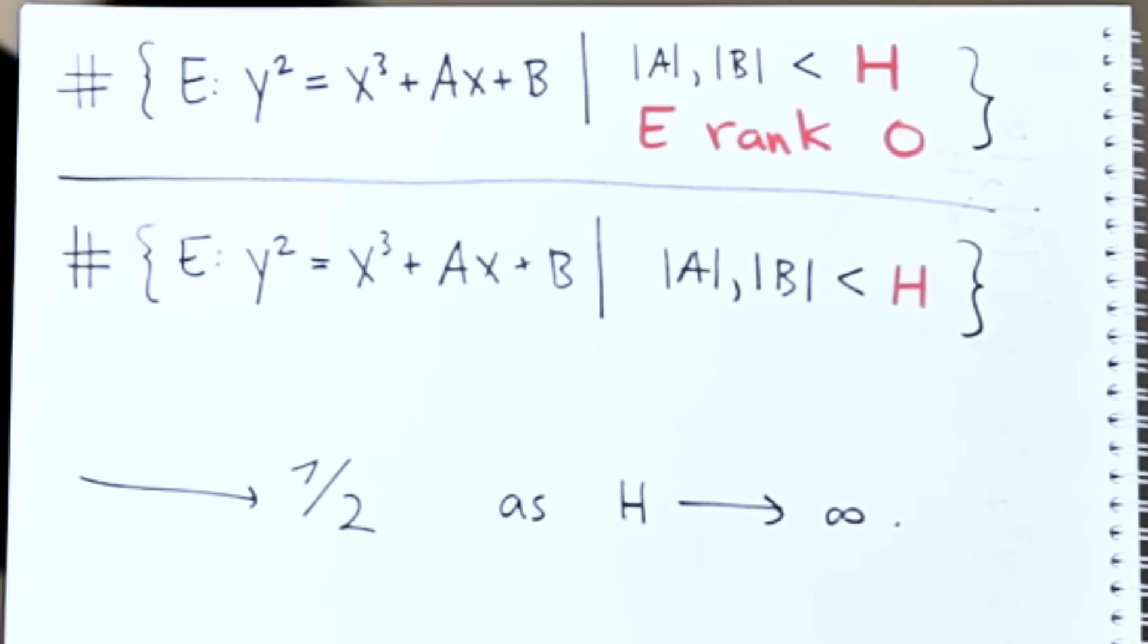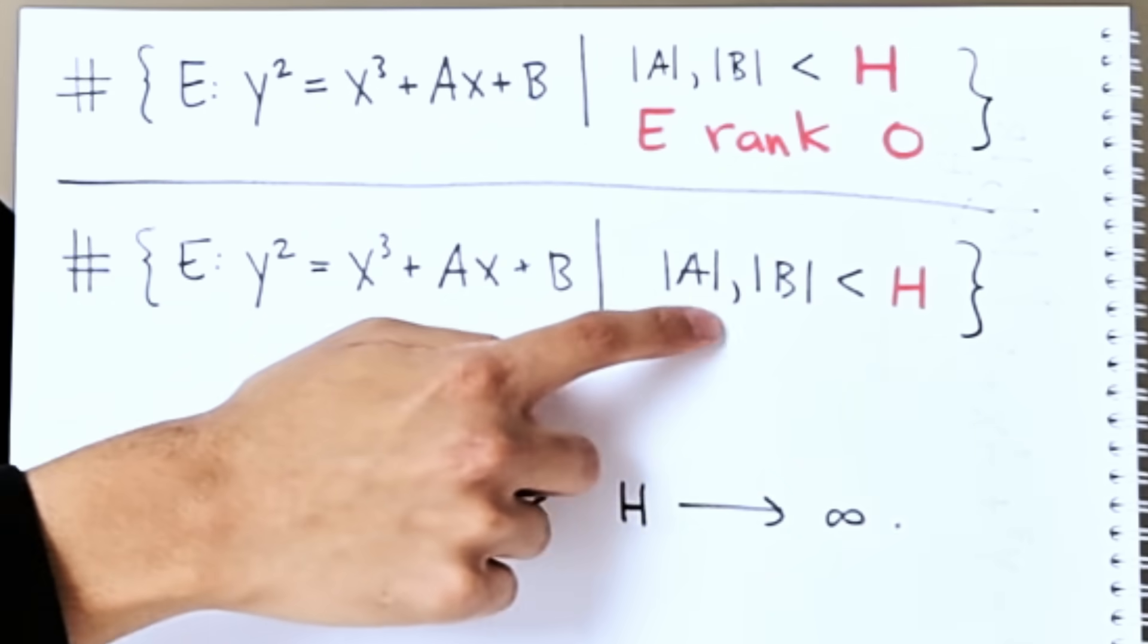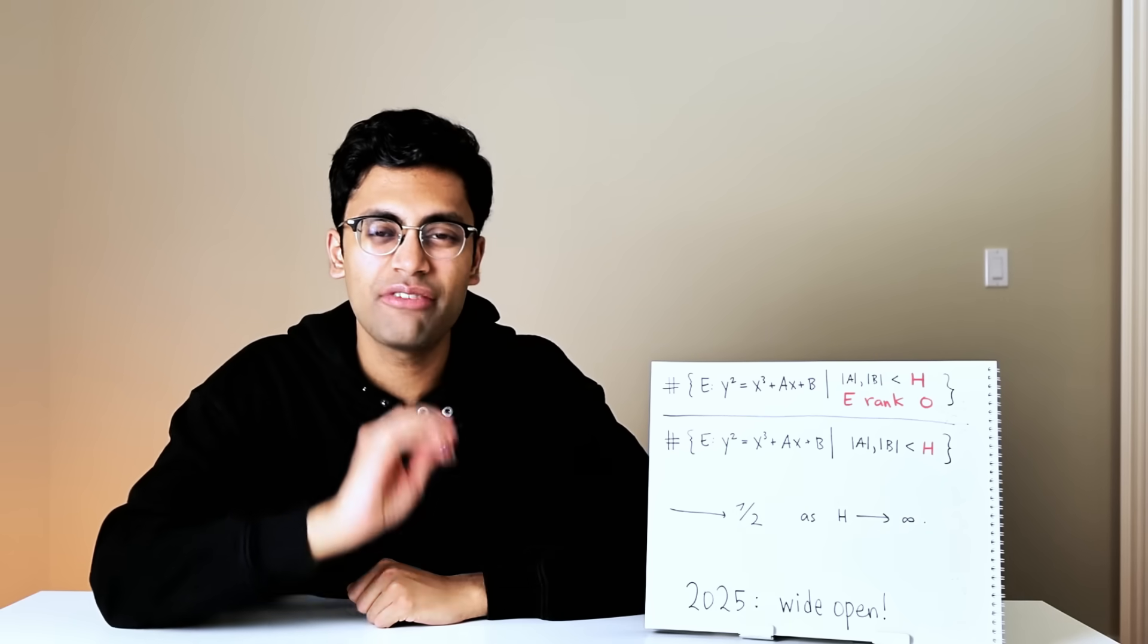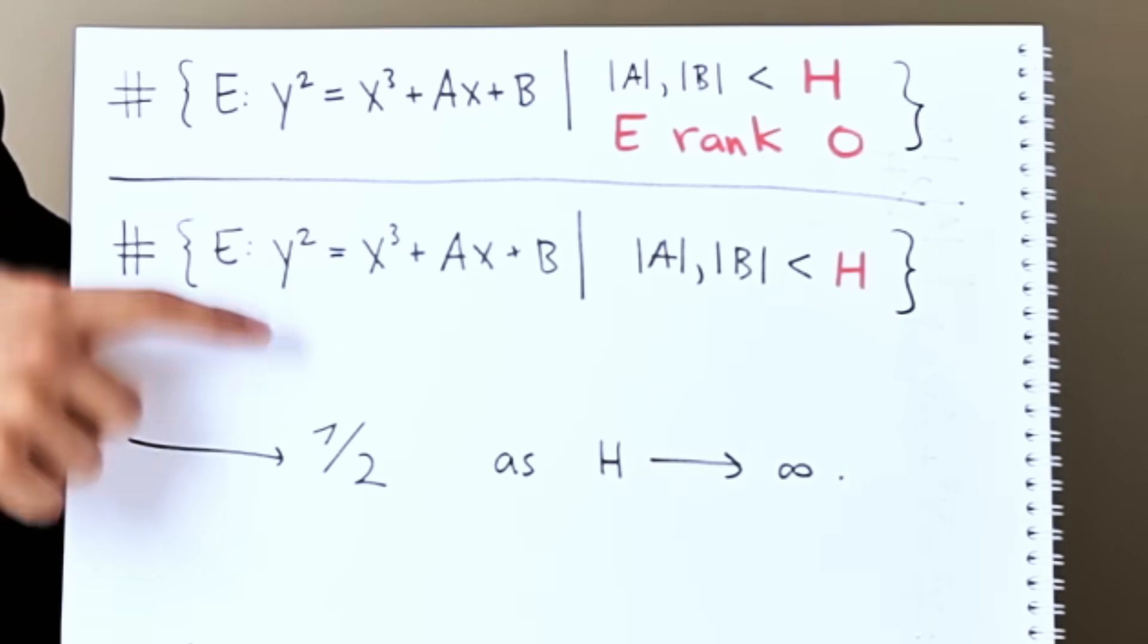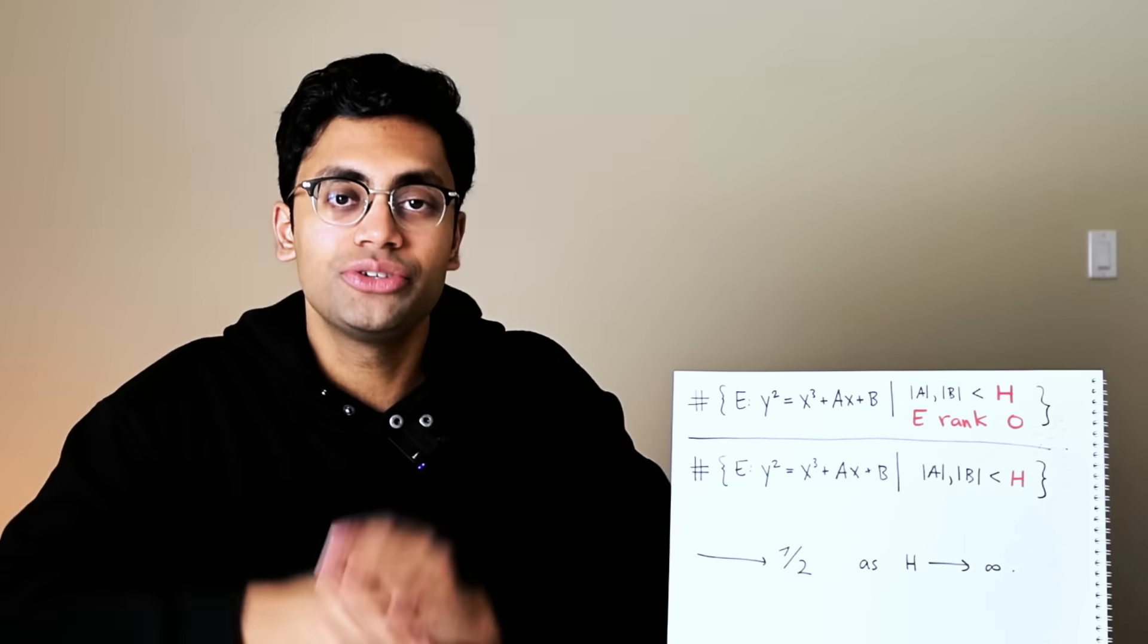How do we state this statement precisely? What do we mean by 50 percent, zero percent? If you take the number of elliptic curves with this equation where a and b are integers with absolute value less than some number h such that E has rank zero, divided by the number of elliptic curves of this equation where a and b are integers less than h, then this fraction approaches one half as h goes to infinity. Likewise if you replace this with rank one, this should also go to one half. And if you replace this with two or three or four or anything bigger, this proportion should go to zero. Now I should stress it's called the rank conjecture because it's a conjecture - it's wide open as of 2025.